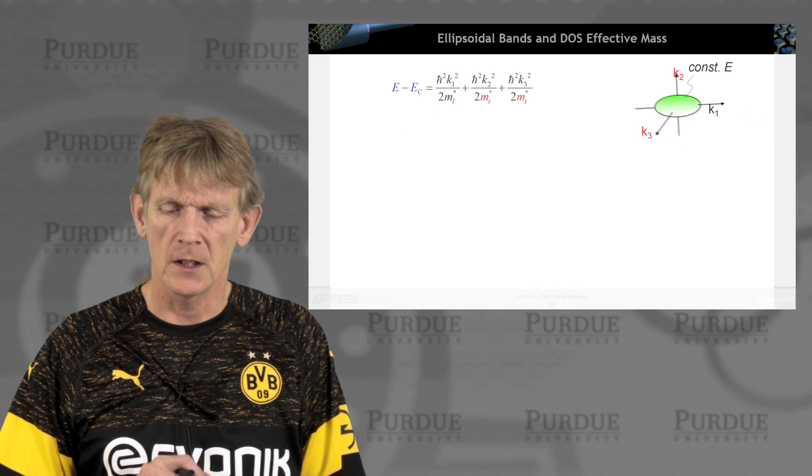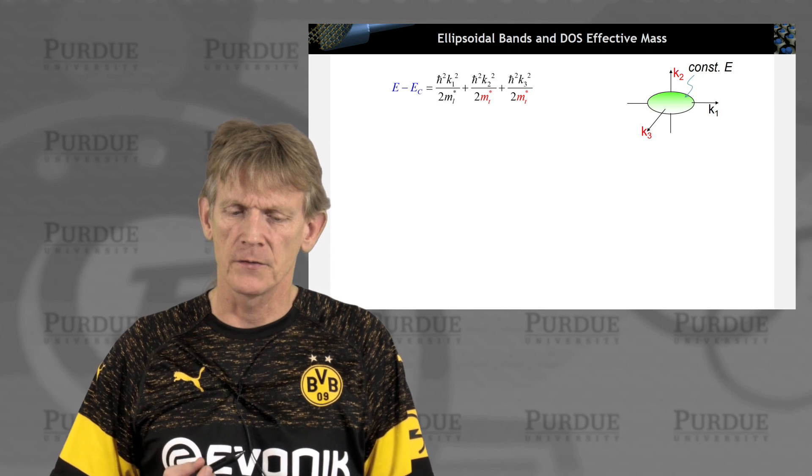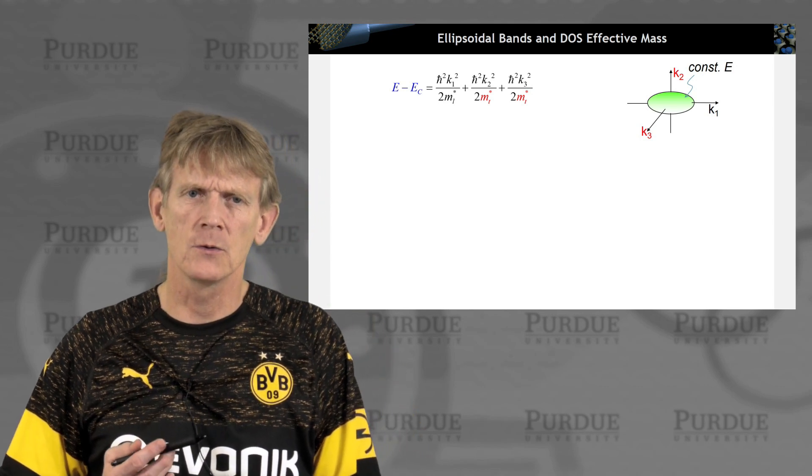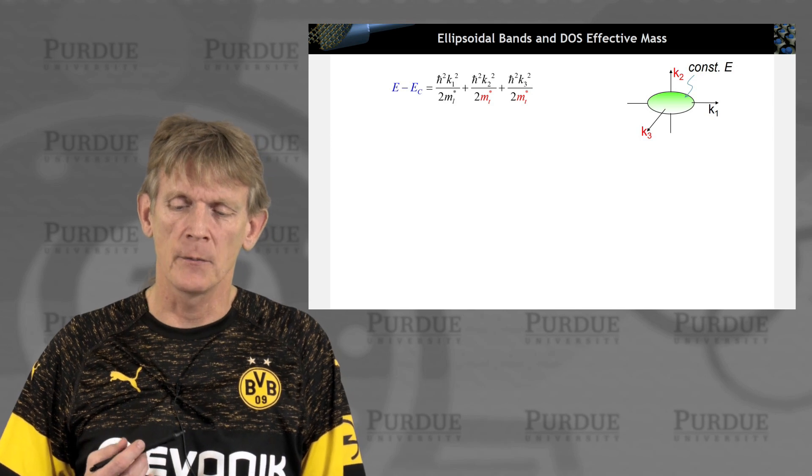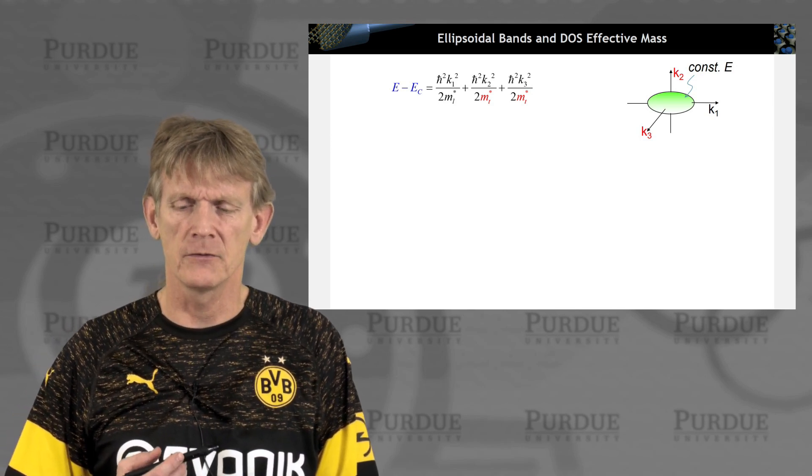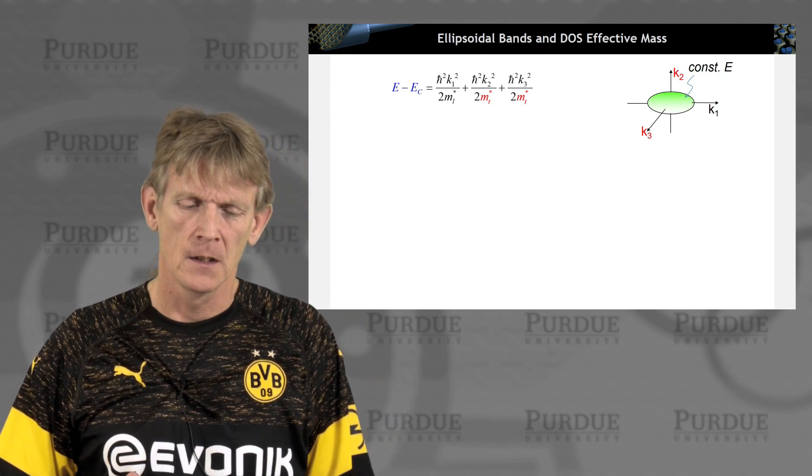And what we're going to do now is approximate this equi-energy surface of this ellipsoid into a single sphere that has the same amount of states in it. So it's the equivalent representation of the complicated ellipsoid.